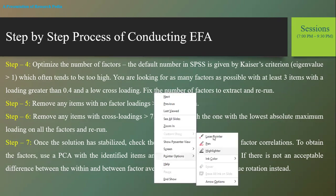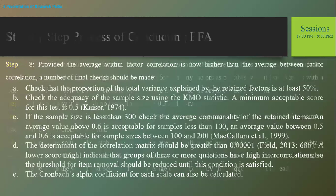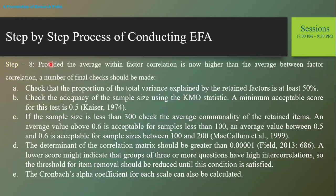Step eight, the second-to-last step in EFA: provided the average within-factor correlation is higher than the average between-factor correlation, a number of final checks should be made. Check that the proportion of total variance explained by the retained factor is at least 50 percent. If this value is less than 50 percent, verify whether some factors have factor loadings less than 0.30 or there is high correlation within the factors.